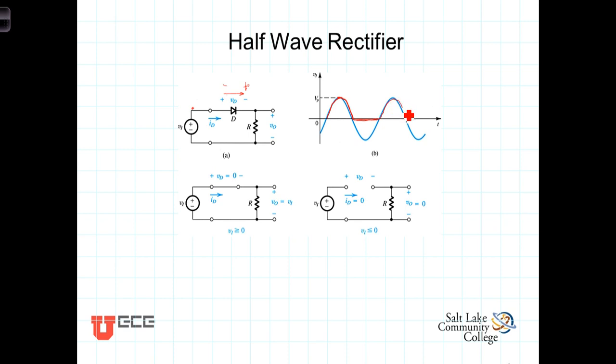The next positive going node that comes along, or part of the cycle that comes along, again we'll see that at the output. And so this circuit then serves as a rectifier. It removes negative voltage and passes only positive voltage.